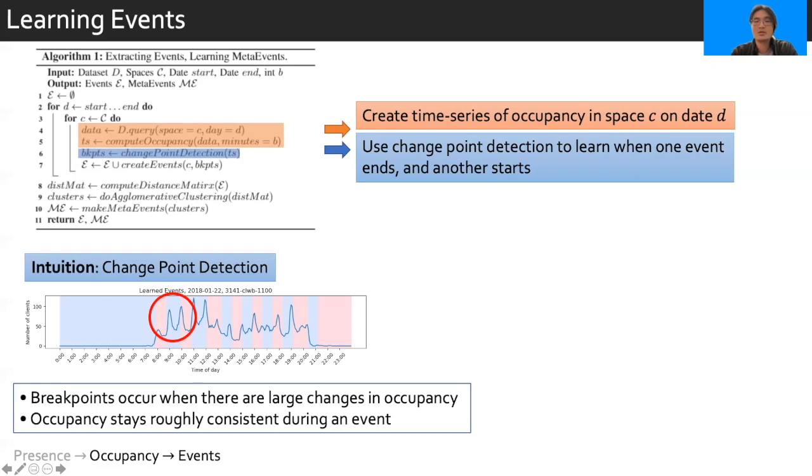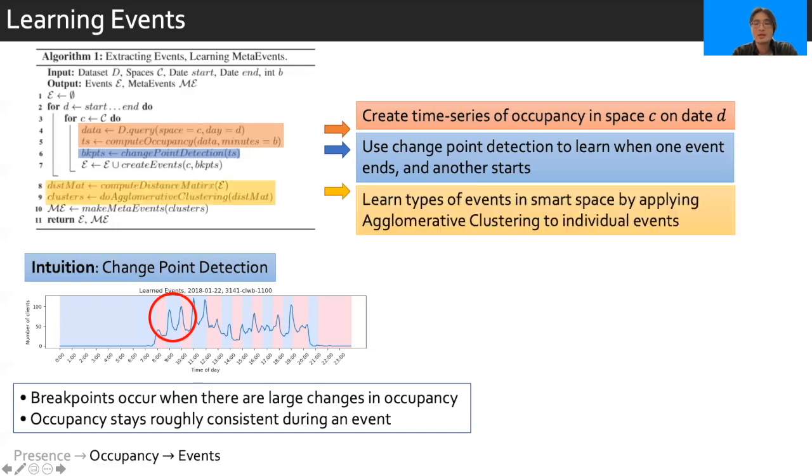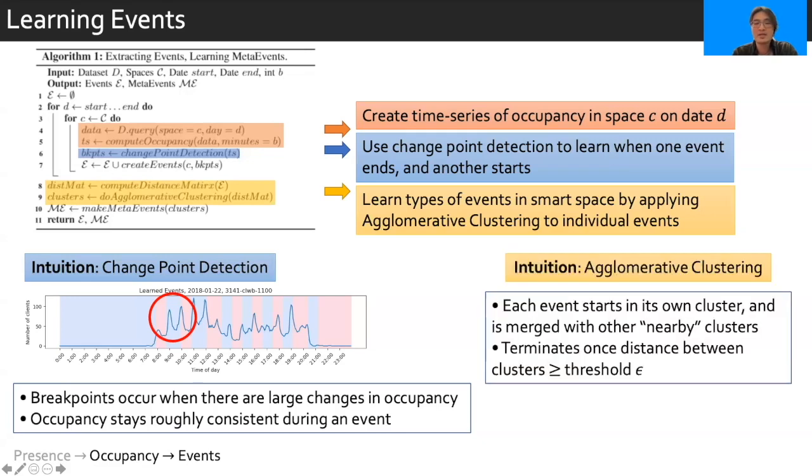However, in creating new synthetic data, we also wish to learn about the different types of events in the smart space. For example, how many lectures there are, how many office hours, etc. This is going to be used later in the scenario generation component. To get a sense of the types of events present in the smart space, we are going to apply an ML clustering technique, agglomerative clustering, to group events of similar nature. For example, this is going to group all lectures together and all office hours together, etc. The high-level intuition of agglomerative clustering is that each event starts in its own cluster and is iteratively merged with other nearby clusters to create groups of events. This is going to be done until a certain distance threshold epsilon is reached.